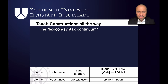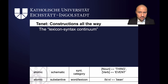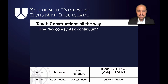We also have atomic schematic constructions, something like a noun or a verb — syntactic categories as they would be called in other approaches. Note the double arrow in the right-hand column: we don't just give the form of these. The syntactic form 'noun' on the meaning level is linked to the concept of a thing, whereas for the syntactic category 'verb', the meaning linked to that is an event. We're talking about prototypical categories here.